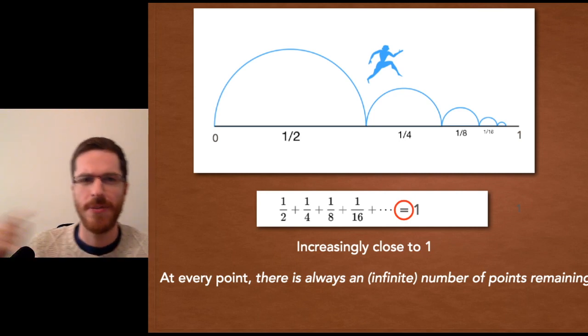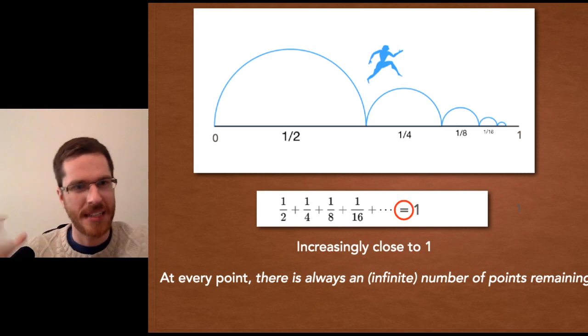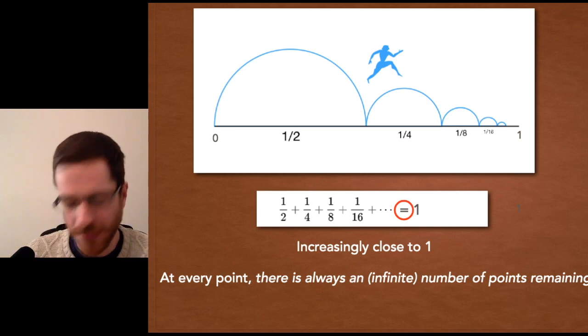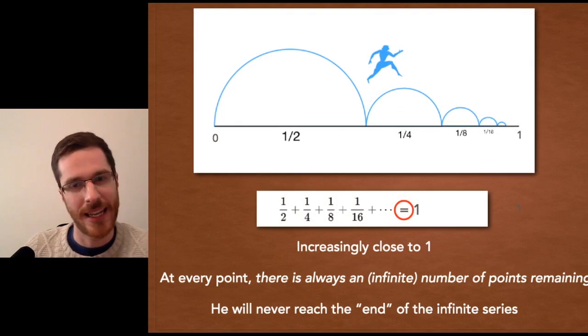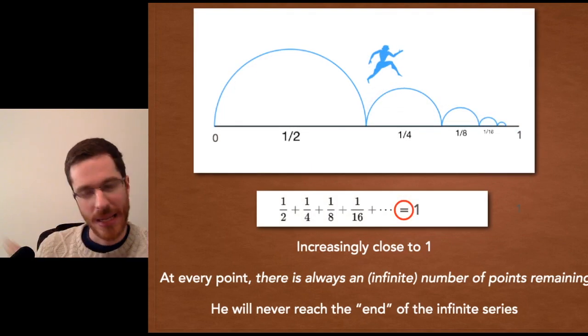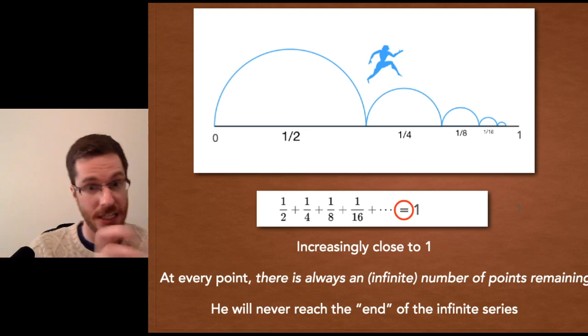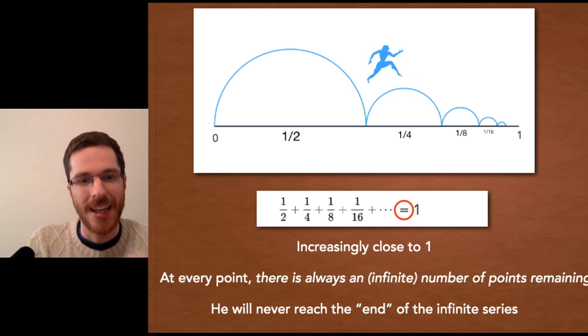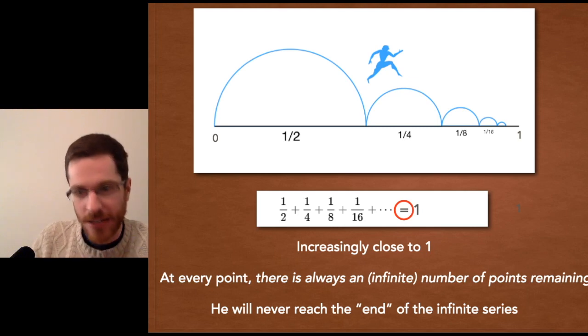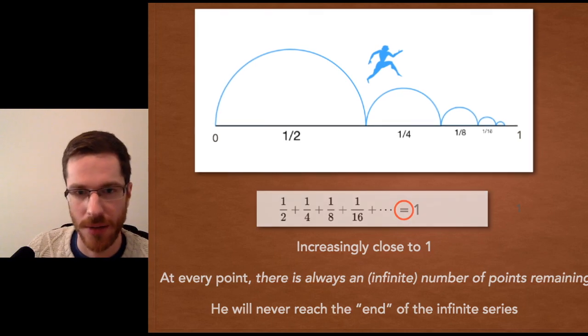And you've got to go an eighth, and you've got to go a sixteenth. So you have infinities in both directions that are all nested inside of each other, which is a problem. If you follow that logic, just like the line will never meet the x-axis, and the series will never literally equal one, the runner will never reach the end of this infinite series. He's never going to reach an end of crossing all of the points.